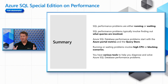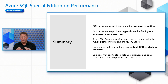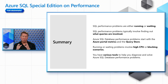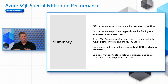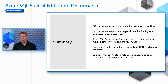In summary, SQL performance problems are either running or waiting, and that gives you a great technique to narrow down a problem. Once you do that, you'll try to figure out what queries are involved in those running or waiting scenarios. You're going to use tools like the Azure portal and the query store to help dive deeper and figure out what that problem is and resolve it. These running or waiting problems typically involve either high CPU or blocking problems, and we'll use those techniques to narrow down which set of problems you're dealing with.